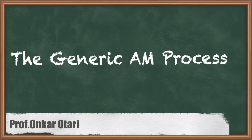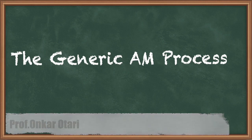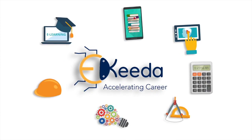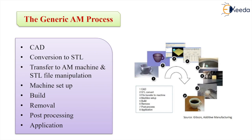Let us see the generic additive manufacturing process. AM involves a number of steps that move from the virtual CAD description to the physical resultant parts. These steps include computer-aided designing from a physical model, image, or design data. The CAD file is then converted to the STL file format.